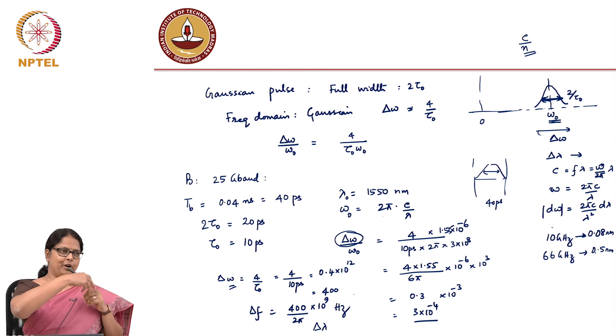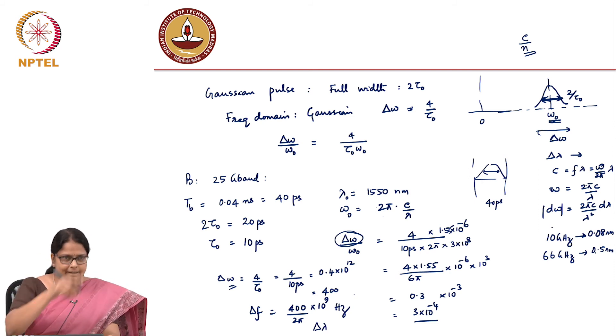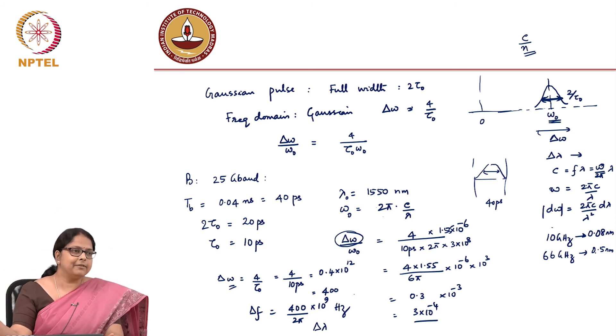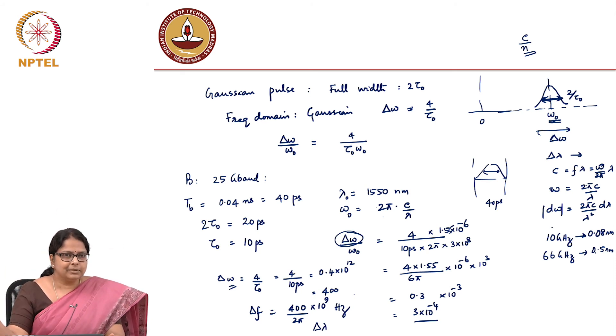So, what are we trying to say? We are saying that if I modulate at 25 gigabaud, the spread because of modulation, because of the fact that you modulated is only 0.5 nanometer, but the spectral spread of the LED itself is 25 nanometer. Of course, you will not use an LED to do this modulation at 25 gigabaud, but what I am trying to say is that which spread matters now?